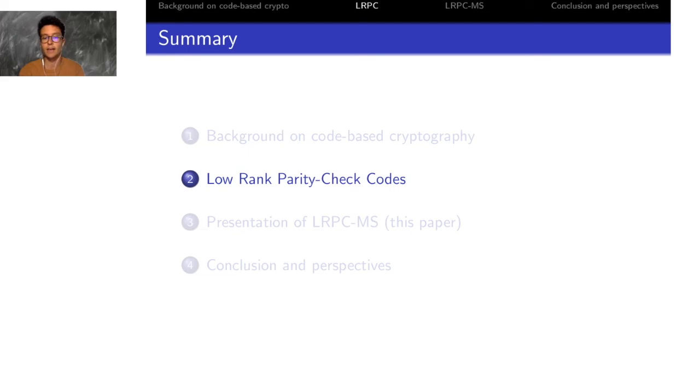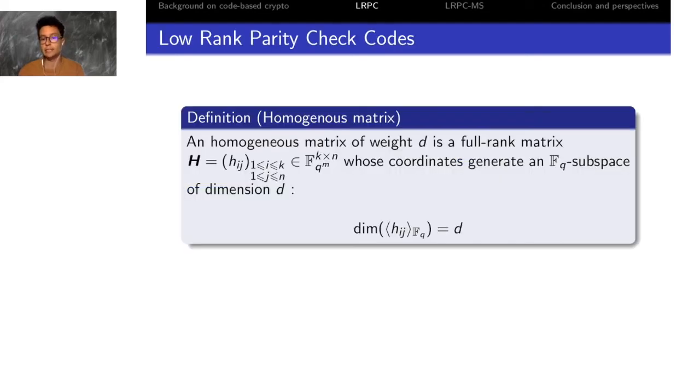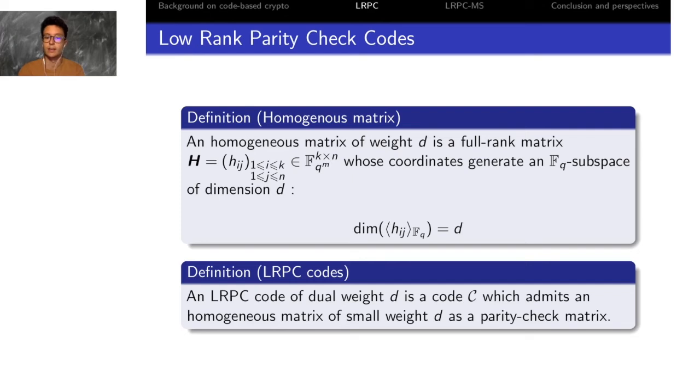Now that I have presented code-based cryptography and how our work inserts in existing results, I will present an efficient class of codes which is used in our key encapsulation mechanism, which is called low rank parity check codes. We first need the definition of a homogeneous matrix, which is a matrix whose coordinates are in a subspace, an FQ subspace of dimension D.